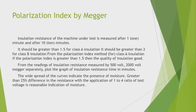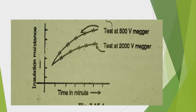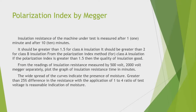Polarization Index by Megger. The insulation resistance of the machine under test is measured after 1 minute and after 10 minutes, tested at 500V and 2000V Megger. The polarization index should be greater than 1.5 for Class A insulation and greater than 2 for Class B insulation.